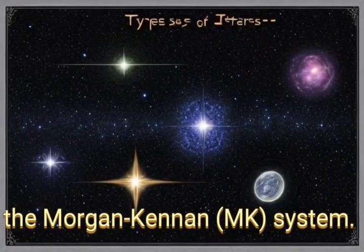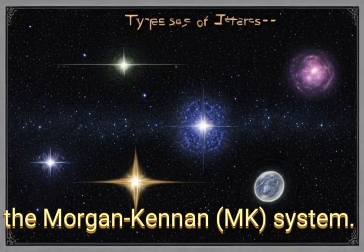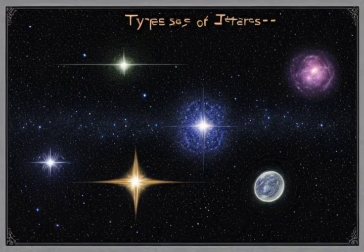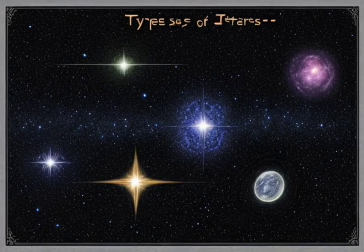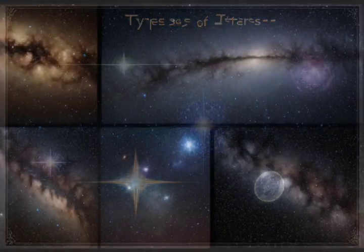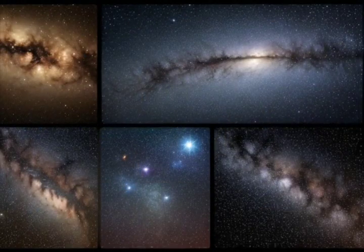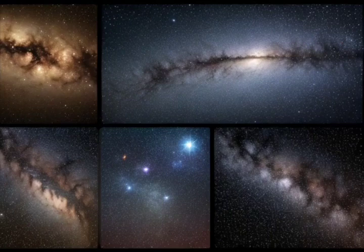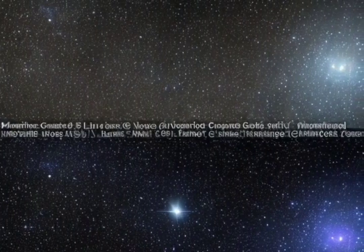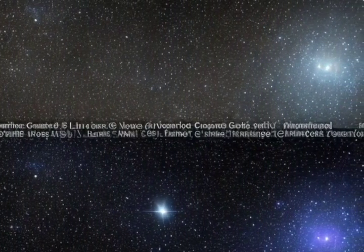The most widely used classification system, the Morgan-Keenan system, categorizes stars into seven main types: O, B, A, F, G, K, and M. This classification scheme provides a framework to understand the differences between stars and helps scientists study their characteristics.